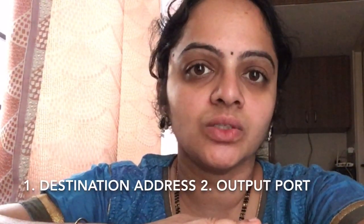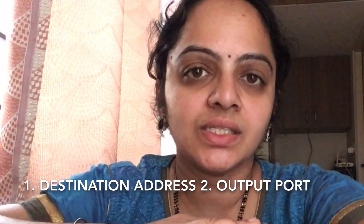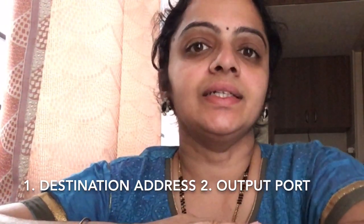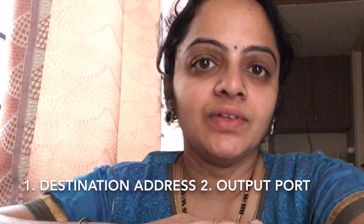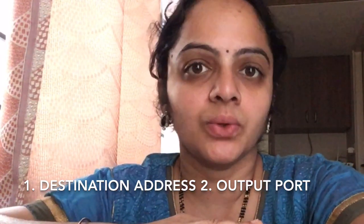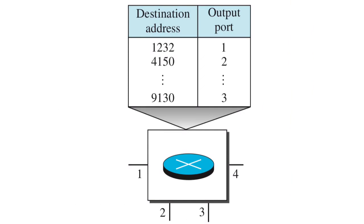Here each node is called as a router because of its functionality. So the routers are maintaining routing table which is having information to route the packet to the next node. In datagrams network the routing table contains two parts. First one is destination address. Second is the output port through which the data will be forwarded to the next node. Here is the example of a routing table in datagrams network.